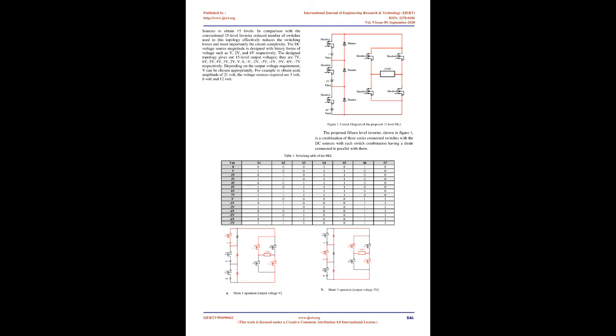Multilevel inverter is gaining prominence because of its ability to meet the increasing demand of high power rated applications and the power quality associated with its reduced total harmonic distortion. Multilevel inverters have found applications in UPS, power grid, solar inverter, induction heating, and industrial applications. They are nearly able to produce a sinusoidal output voltage waveform using fundamental frequency switching scheme, and as the number of steps are increased, the waveform looks more close to a sinusoid, thus reducing harmonic content.